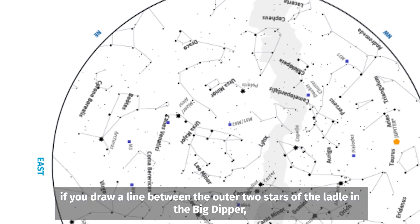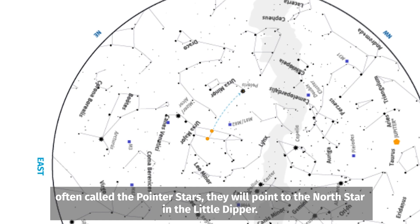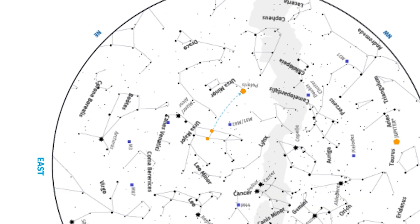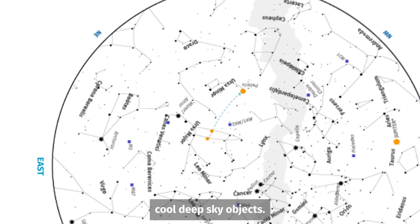For example, if you draw a line between the outer two stars of the ladle in the Big Dipper, often called the pointer stars, they will point to the north star in the Little Dipper. These constellations can help guide you to super awesome, cool, deep sky objects.